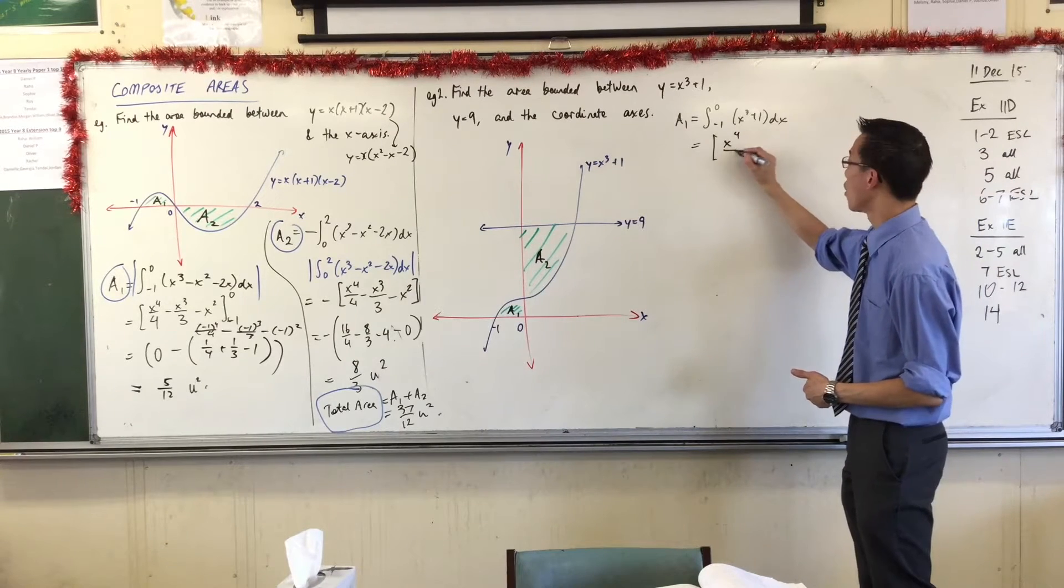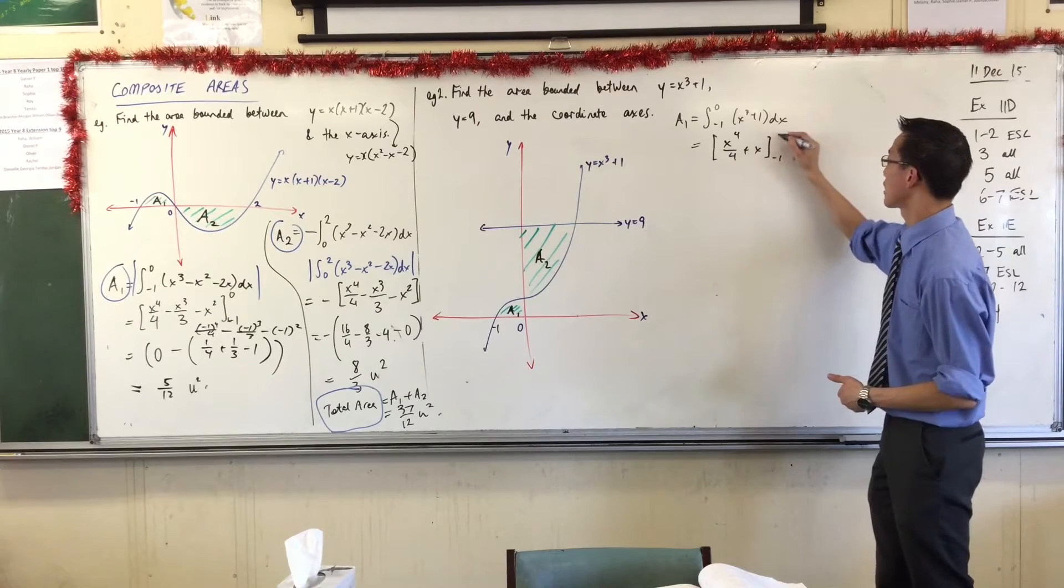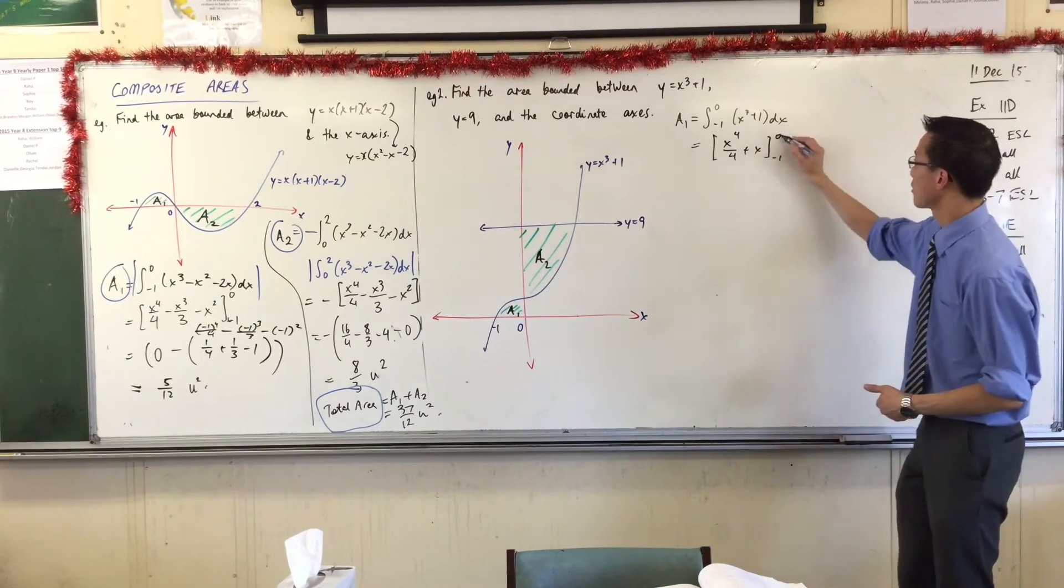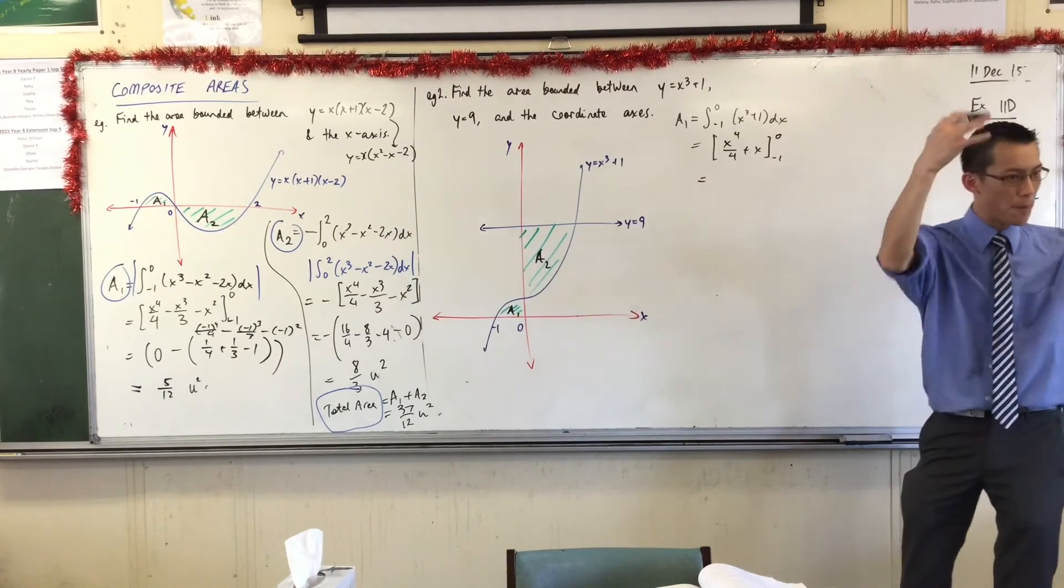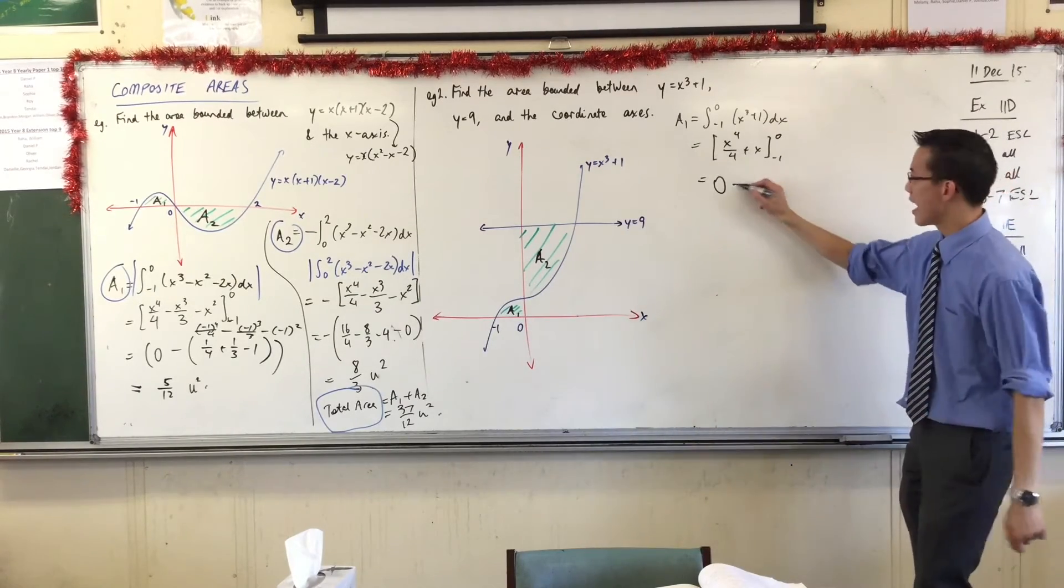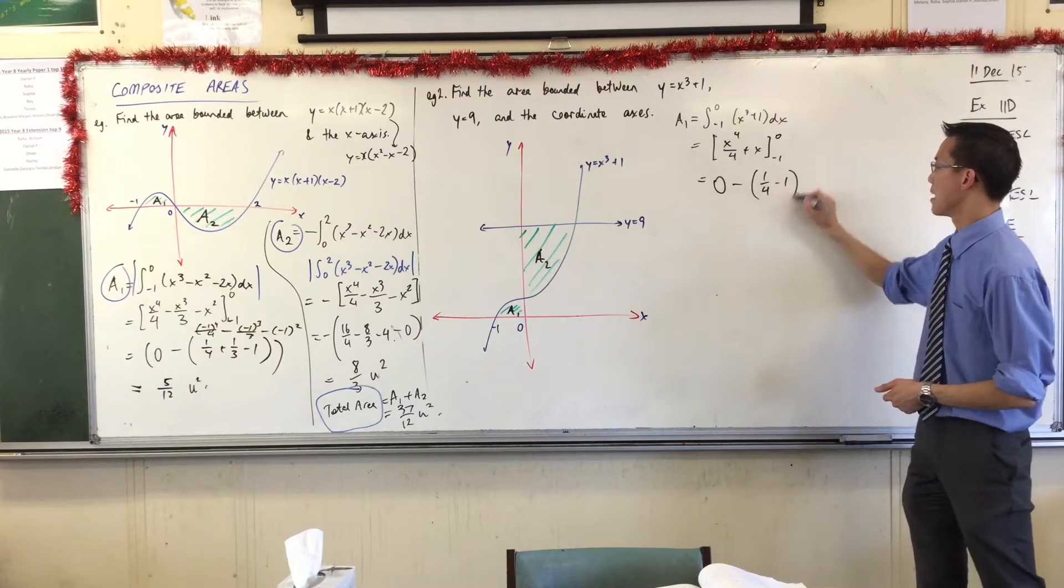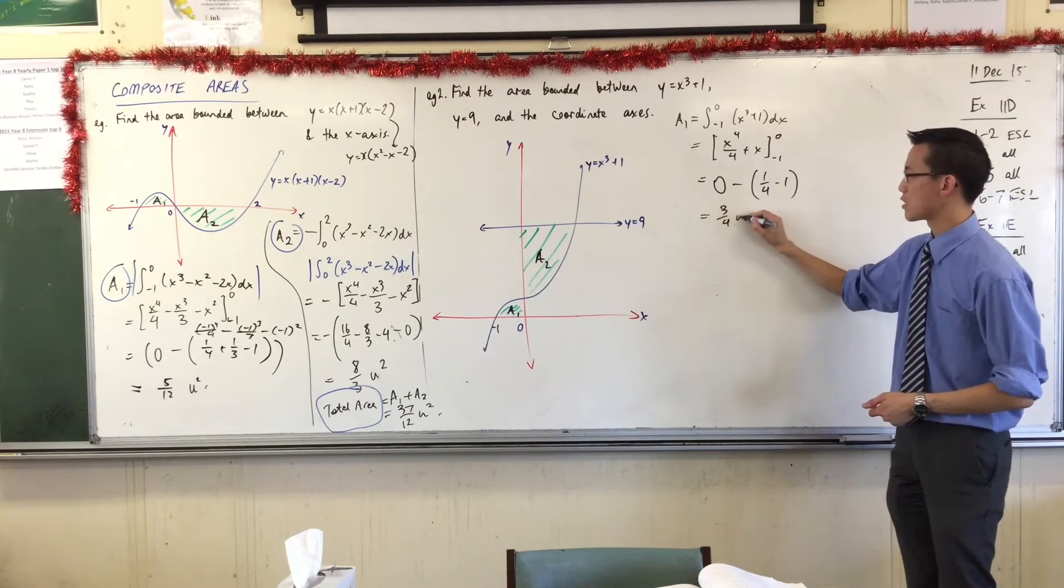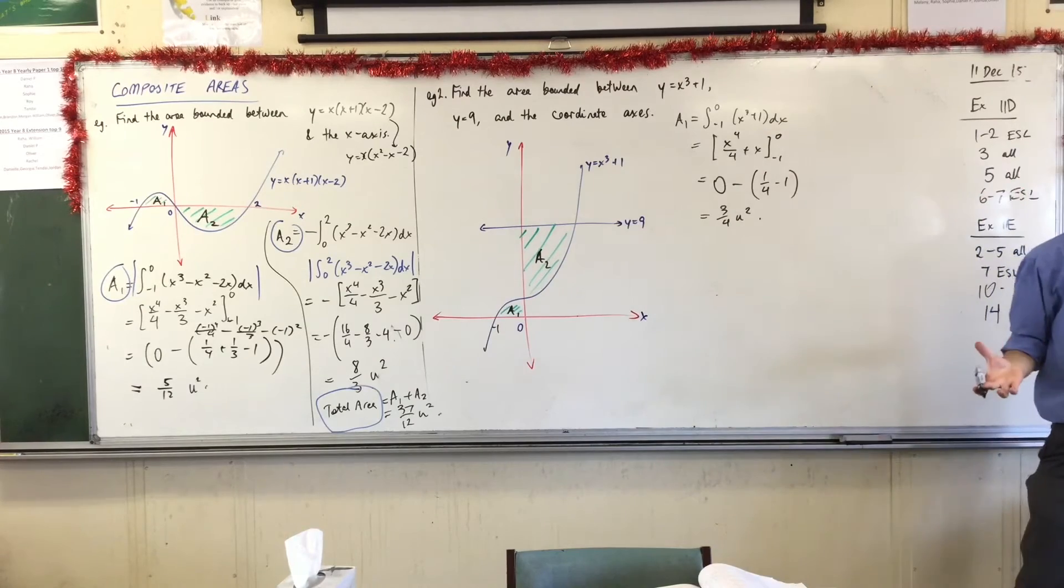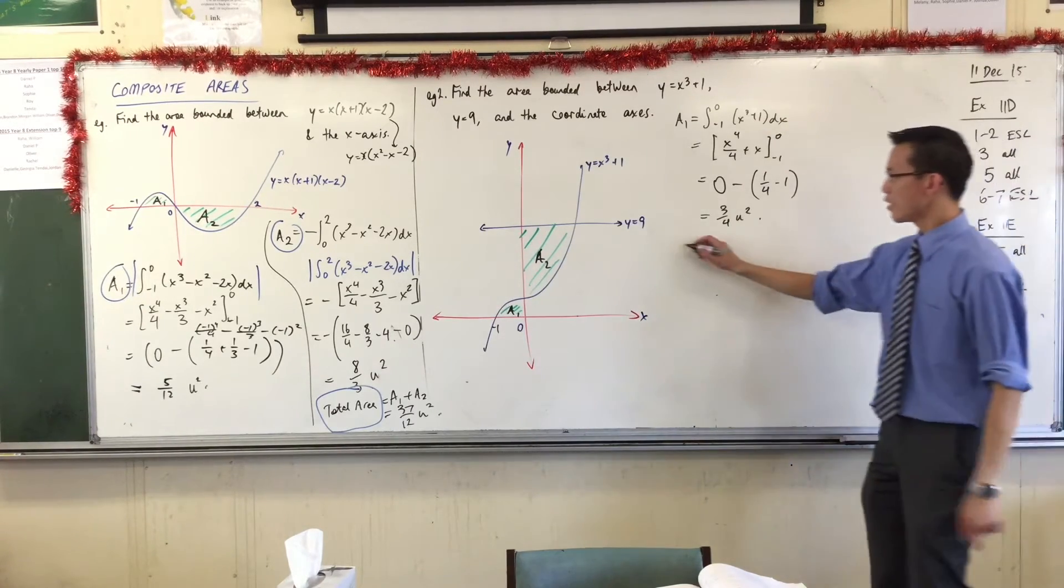Okay, I'll evaluate at the upper bound which is zero, that gives me zero. And then I'll evaluate at my lower bound which gives me, that's a quarter minus one, that looks like three quarters to me. You happy with that? Okay great, area one is fine.